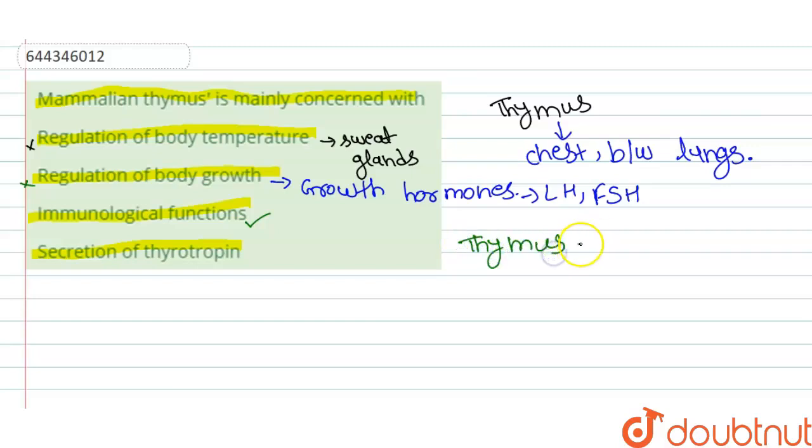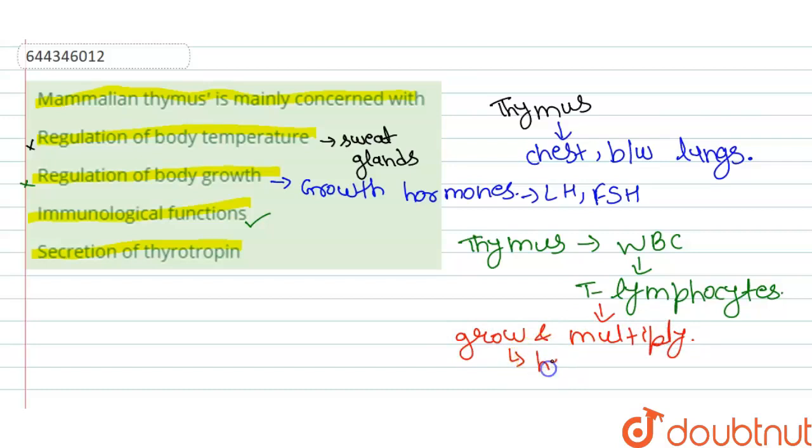thymus gland makes white blood cells, which is T cells, T lymphocytes. These T lymphocytes grow and multiply in thymus.